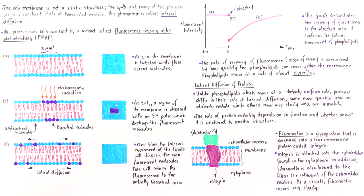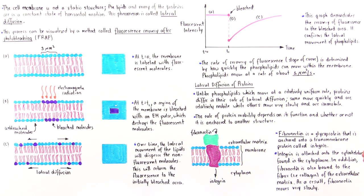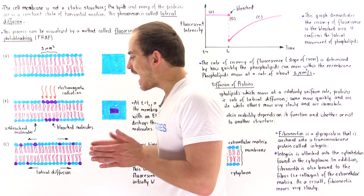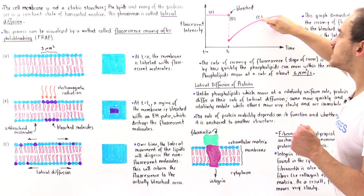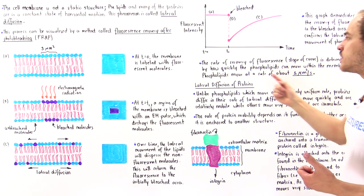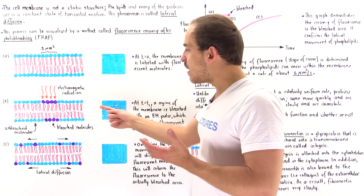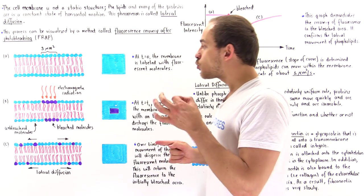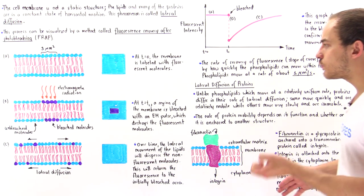So this graph demonstrates the recovery of fluorescence in that bleached area. It confirms the existence of this phenomenon we call lateral diffusion. Now, the question is, what determines the rate at which that area actually recovers its fluorescence? So what determines the slope of this particular line? Because the slope is ultimately the rate of recovery of fluorescence. Well, it's the speed at which these molecules can actually move along that membrane. So the higher the speed, the greater the likelihood that the molecules will move away. And so the higher the recovery rate is.